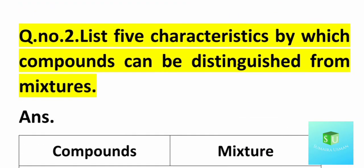Long question number 2: List five characteristics by which compounds can be distinguished from mixtures. You have to tell some characteristics by which we can distinguish compounds from mixtures. In your book, there are seven differences between compounds and mixtures in total, so you can write up to seven or even eight points.